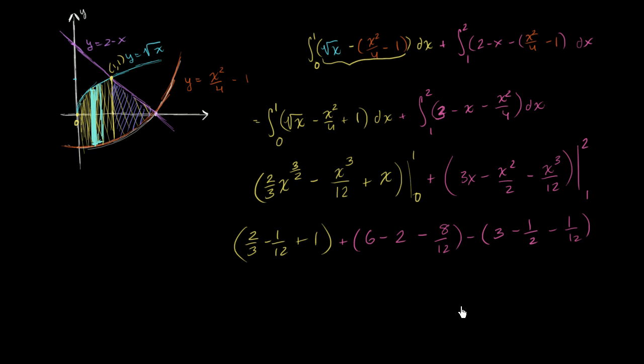And now what we're essentially left with is adding a bunch of fractions. So let's see if we can do that. It looks like 12 would be the most obvious common denominator. So here you have 8 over 12 minus 1 over 12 plus 12 over 12. So this simplifies to 19 over 12, the part that we have in yellow.